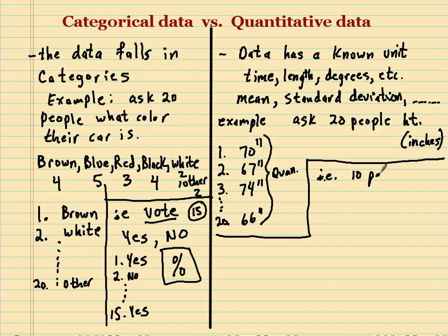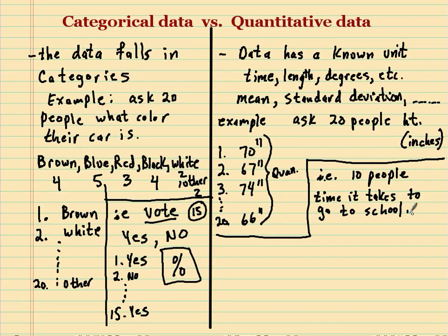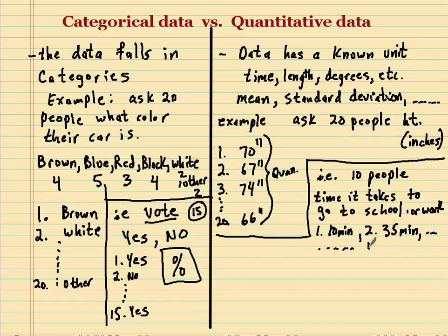Here's another example: let's ask 10 people the time it takes to go to school or work. The first person lives pretty close, so he says 10 minutes. The second person is a bit farther, so 35 minutes. We keep asking until we have all 10 people, and the last person is pretty far at 70 minutes. With quantitative data we're actually able to find the average time it takes these 10 people to get to work — the time is measurable.